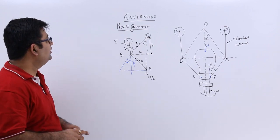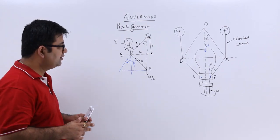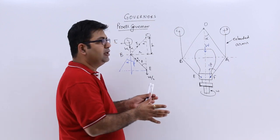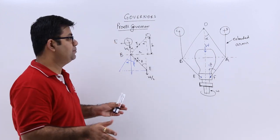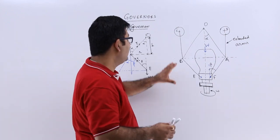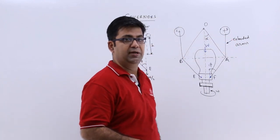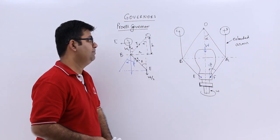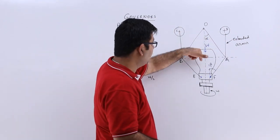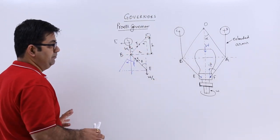Now let's talk about the Proell governor. In the Proell governor, the majority of the configuration is the same as the Porter governor, but you have these extended arms on which the fly balls are attached. Like the Porter governor, you also have a weighted sleeve at the center. Rest everything is the same.